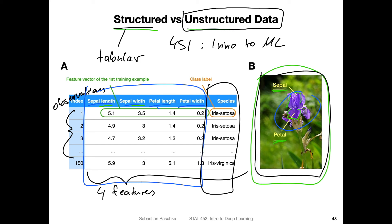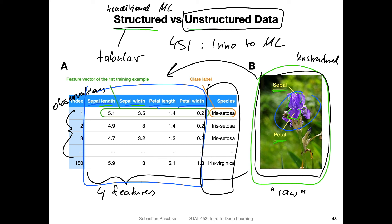In contrast, an unstructured dataset is the raw data — for example, the raw flower image. You can extract structured data from unstructured data, but it's not always simple and may require human help. Structured data is used in traditional machine learning, while unstructured data is where deep learning shines, because deep learning implicitly handles the feature extraction step internally. The downside is that deep learning requires much more data — the iris dataset only has 150 examples, which is sufficient for traditional ML.